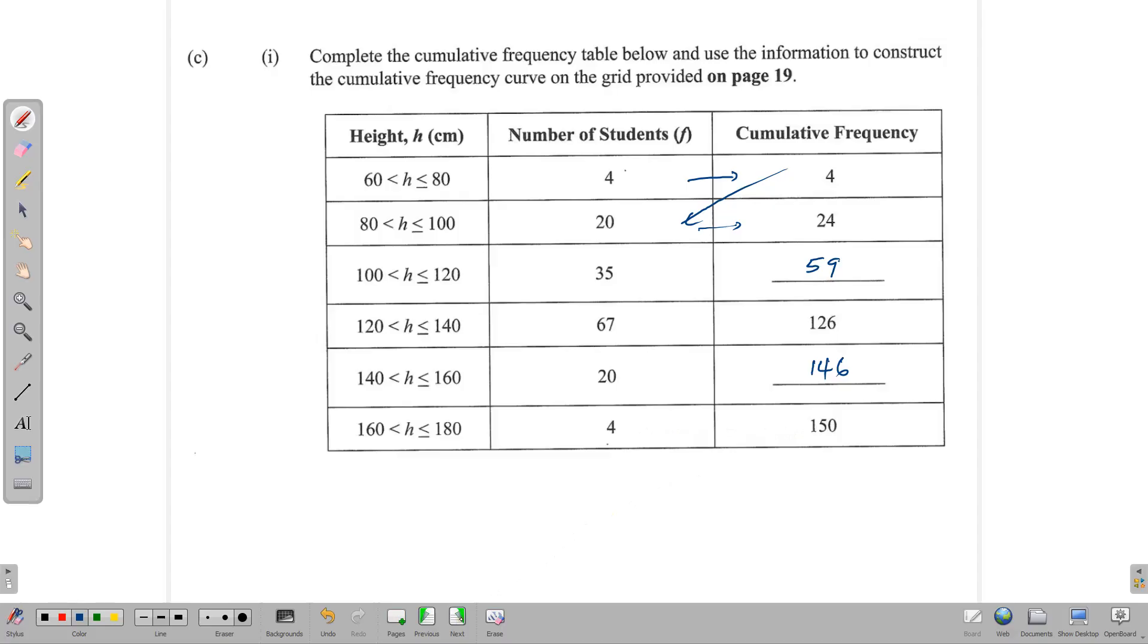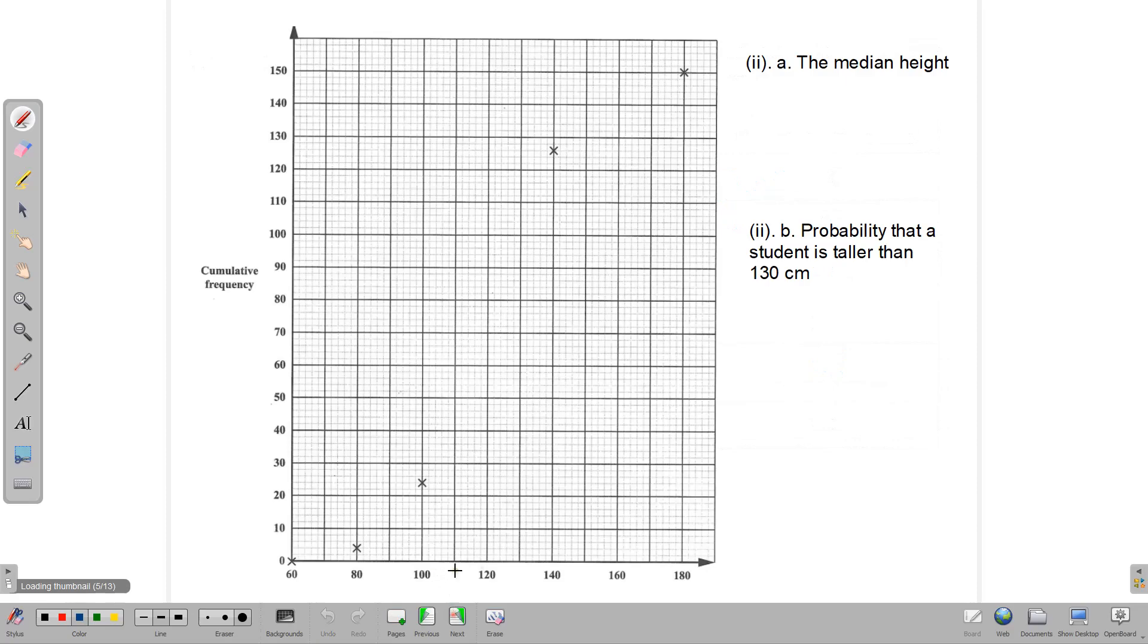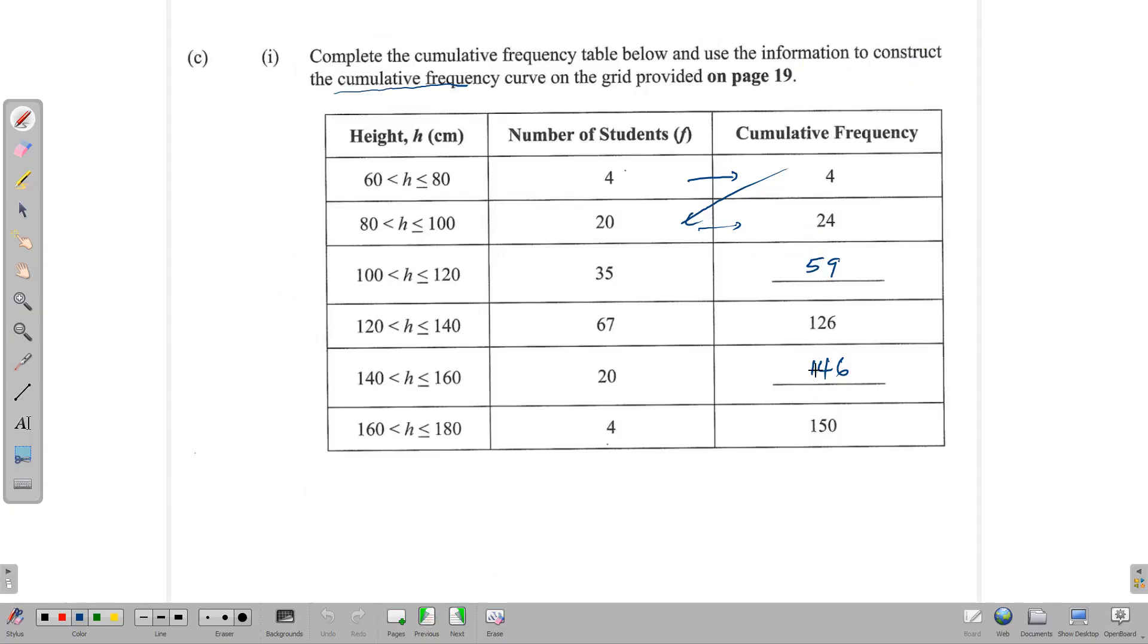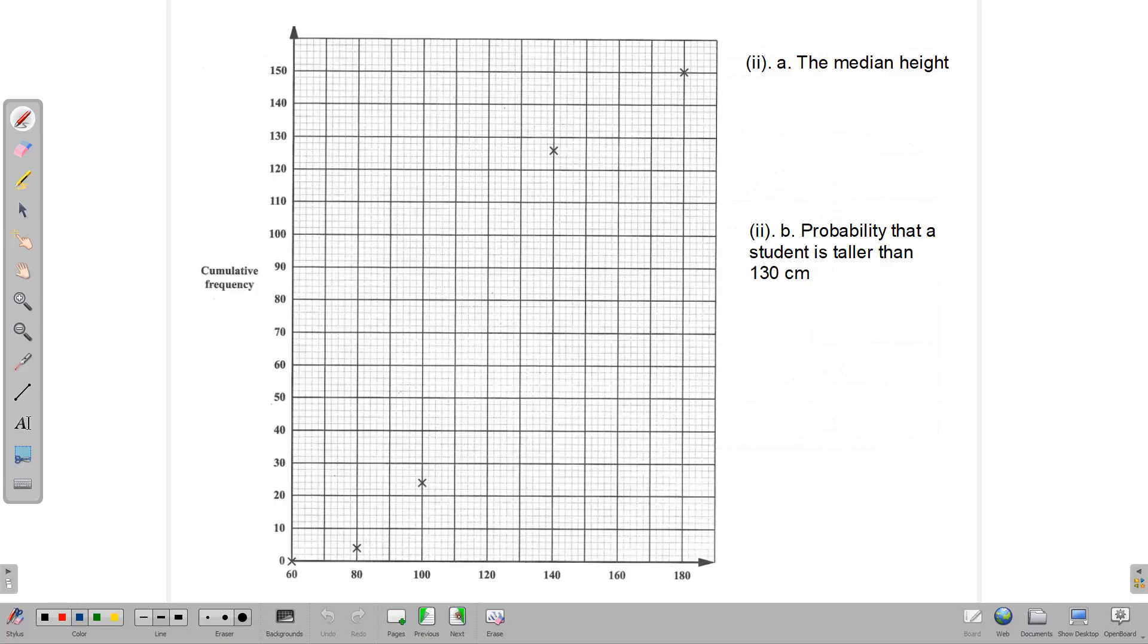Now, we are supposed to use this information to draw a cumulative frequency curve, which has been started already. Notice that four of the values are in place. One, two, three, four. And we are supposed to fill in the two that we just did. Now, importantly, when you are looking at a graph, you need to look at the axis and see what this scale is saying. So here we are using two centimeters to 20. One centimeter to 10, which means that each tiny box within this section here represents two. Same thing here. Each tiny box represents two. That's important to remember.